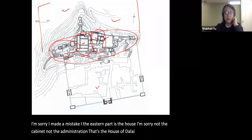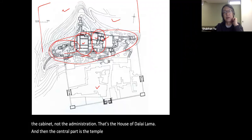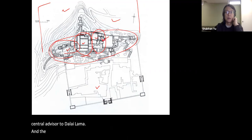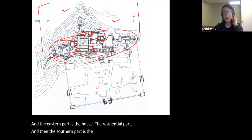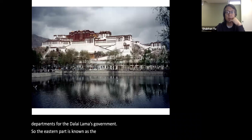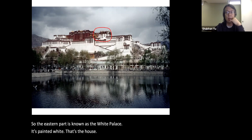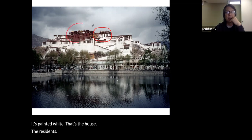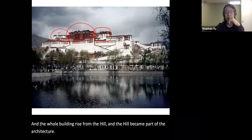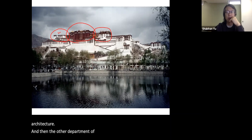To clarify the sections: the eastern part is the house — the residence — of the Dalai Lama, known as the White Palace, painted white. The central part is the temple, painted red — the religious part. The western part is also painted white — that is the cabinet, the political part, the central advisors to the Dalai Lama. The southern part has expanded different ministries and departments for the Dalai Lama's government. The whole building rises from the hill, and the hill became part of the architecture.